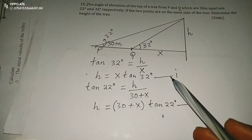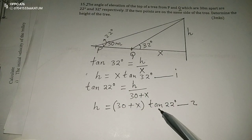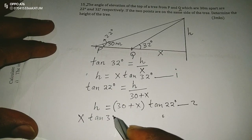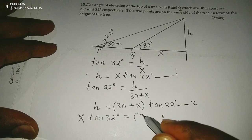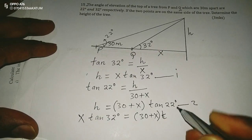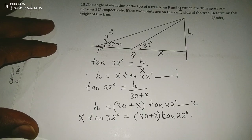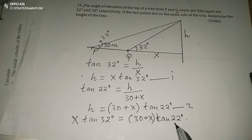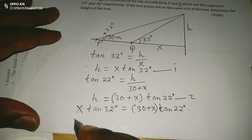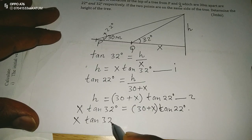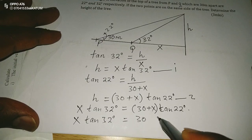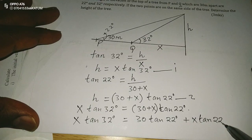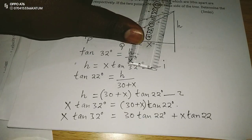Now that the first equation gives us H and the second equation also gives us H, we can equate the two sides and argue that X times tan(32) is equivalent to (30 + X) times tan(22 degrees). We can group the parts with X together, because this is X times tan(32), and opening the brackets gives us 30 tan(22 degrees) plus X times tan(22).